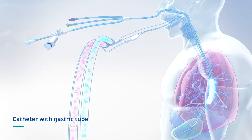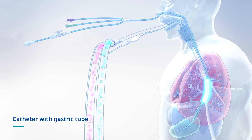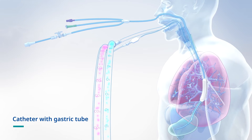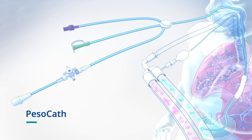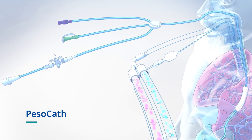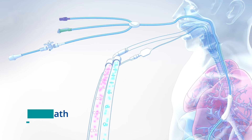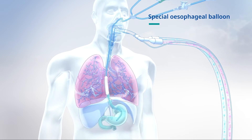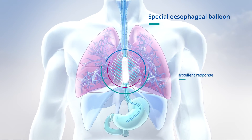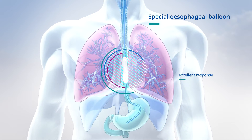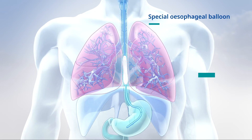The first available catheters often resulted in compromise and were less suitable for prompt pressure transmission. Löwenstein's PESO-CAD was specially developed for esophageal and transpulmonary pressure monitoring. Its specially designed esophageal balloon facilitates an excellent response to rapid pressure changes under ventilation and is designed for the dynamic requirements of transpulmonary pressure measurement.